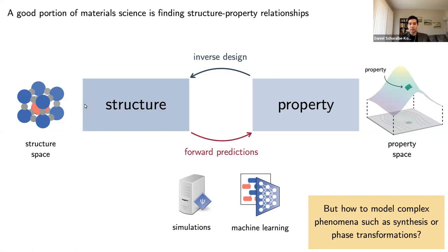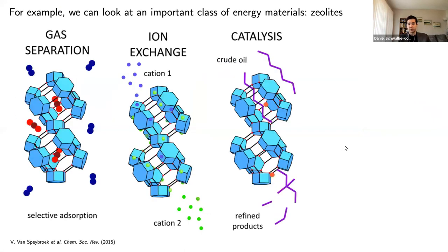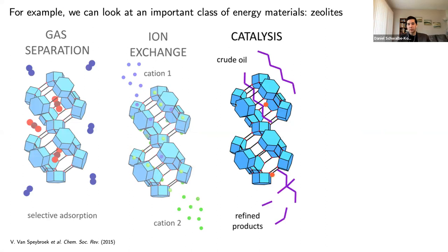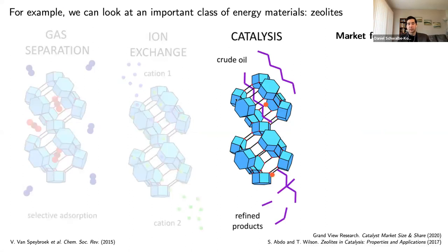Representation plays a big role in determining how this map from structure to property will look. But not everything about structure is well-defined as a crystalline ground state geometry. Complex phenomena such as synthesis and phase transformations are not static entities in structure space representable with one single descriptor or set of basis functions. Rather, they're complicated processes that happen dynamically at higher temperatures and may not be easily described by one single entity.